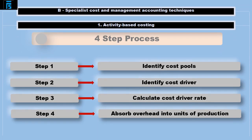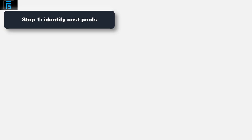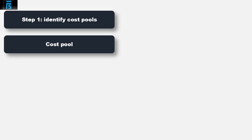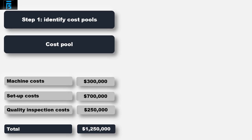Now let's calculate the cost per unit using activity based costing, using the four-step approach. Step 1 is to separate overheads into cost pools. This has been done for us in the question: the total company overhead of $1.25 million has been separated into three cost pools — machine costs of $300,000, set-up costs of $700,000, and quality inspection costs of $250,000.